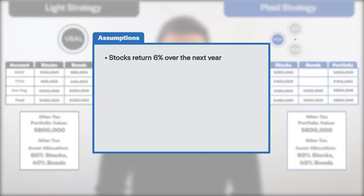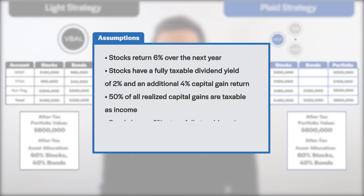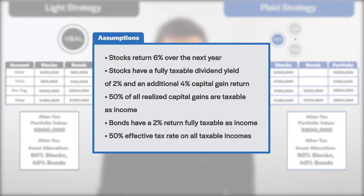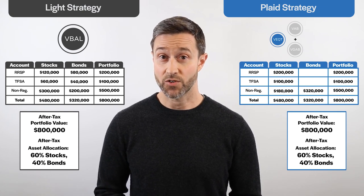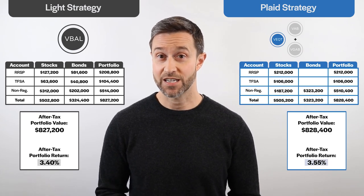Let's now assume stocks return 6% over the next year, comprised of a fully taxable dividend yield of 2% plus a 4% capital gain with a 50% inclusion rate. We'll also assume our bonds return 2% over the next year, and this amount is fully taxable. Our average tax rate will be 50%, and since the $200,000 RRSP value is an after-tax figure, the after-tax RRSP behaves like a TFSA — there will be no taxes payable on this amount or on any of its investment growth. After paying all taxes at the end of the year, the plaid asset location strategy outperformed the light asset location strategy by 0.15% after-tax.